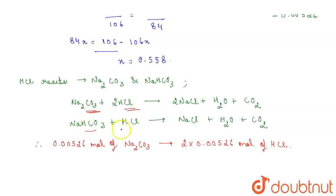And moving to the second reaction, 1 mole of NaHCO3 is reacting with 1 mole of HCl. So, 0.00526 mole of NaHCO3 will react with 0.00526 mole of HCl.